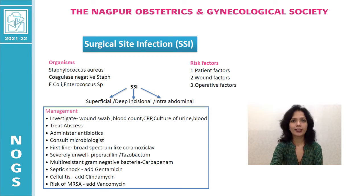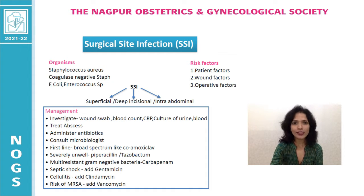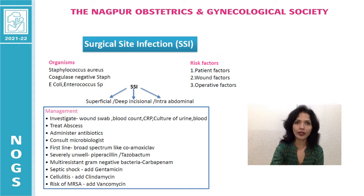Hello, I'm Dr. Neeta Sapre. Surgical site infections are commonly encountered after cesarean sections and hysterectomies. Mostly the pathogens are from the patient's endogenous flora, such as Staphylococcus aureus, coagulase-negative staphylococcus, Enterococcus, and E. coli.